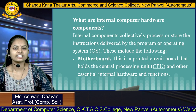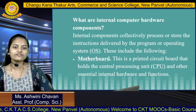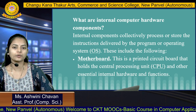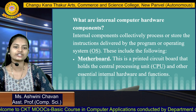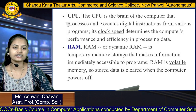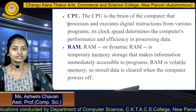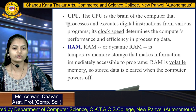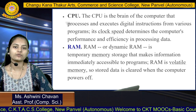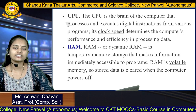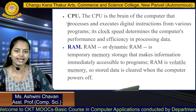Internal computer hardware components collectively process or store the instructions delivered by programs or the operating system. These include the motherboard — a printed circuit board that holds the CPU and other essential internal hardware. The central processing unit is the brain of the computer that processes and executes digital instructions; its clock speed determines performance and efficiency. Next is the dynamic RAM, a temporary memory used to store data that makes information immediately accessible to programs.